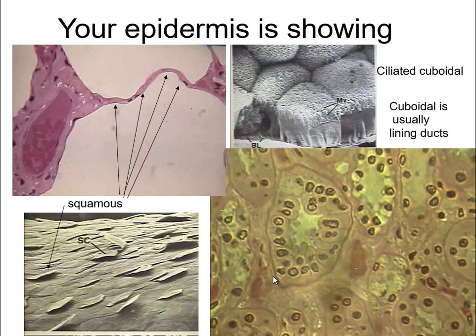Squamous are easy because they're flat — there's no mistaking them. If you look, the nucleus looks almost like a fried egg: you have a flat egg with a little bit of yolk sticking up. That would be your squamous cell.